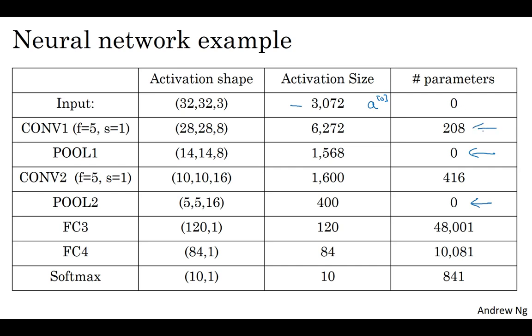Second, notice that the conv layers tend to have relatively few parameters, as we discussed in an earlier video. And in fact, a lot of the parameters tend to be in the fully connected layers of the neural network. And then you notice also that the activation size tends to maybe go down gradually as you go deeper in the neural network. If it drops too quickly, that's usually not great for performance as well. So it starts in the first layer with 6000, then 1500, 1600, and then it kind of slowly falls to 84, until finally you have your softmax output. And you find that a lot of ConvNets will have properties, will have patterns similar to these.